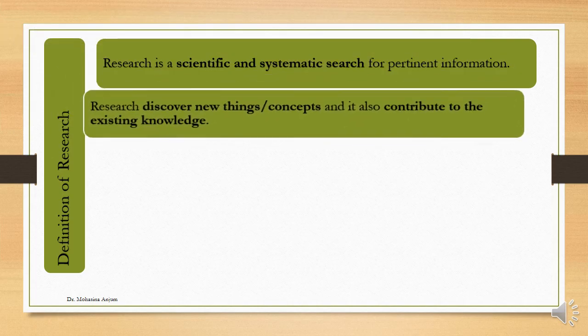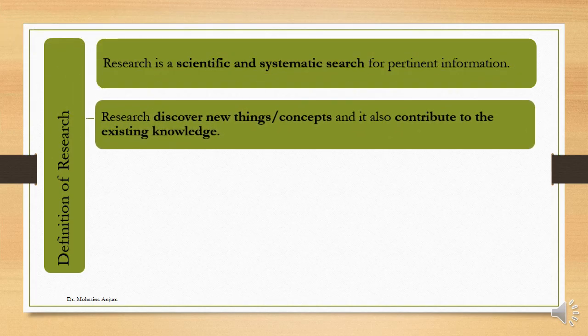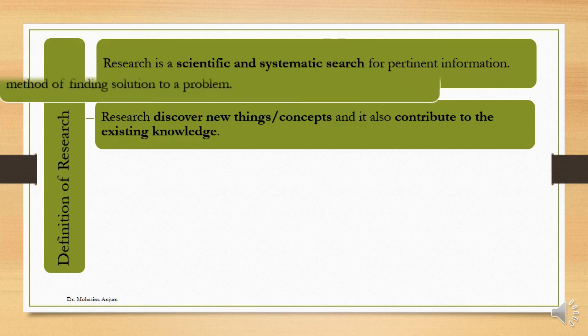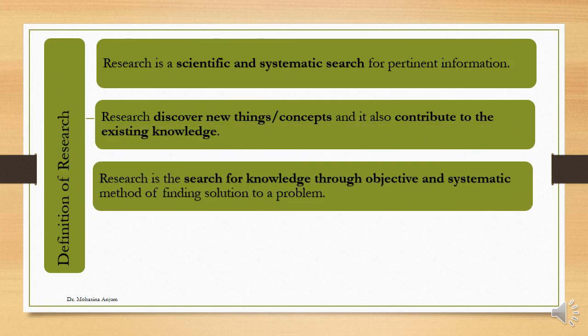The next definition is that research discovers new things or concepts, and it also contributes to existing knowledge. For example, different kinds of items such as vehicles, mobile phones, TV, etc., are discovered through systematic research. Without research on computers, the multiple uses of computers could not have been known. Research is also a search for knowledge through objective and systematic methods of finding solutions to a problem.